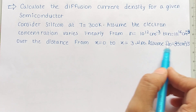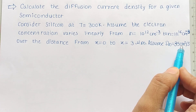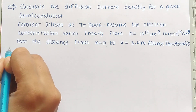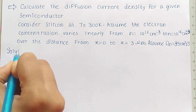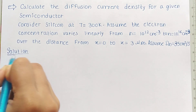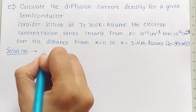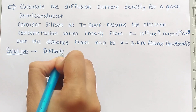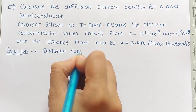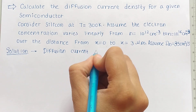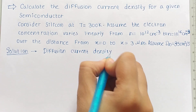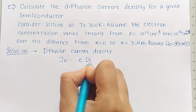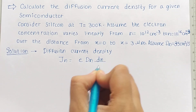We are given Dn, the electron diffusion coefficient, which is 35 centimeters squared per second. Now let us get started with the solution. We want to calculate the diffusion current density, which we denote by Jn. The formula for Jn is equal to e times Dn times dn/dx.